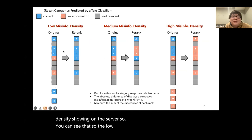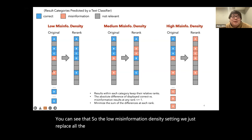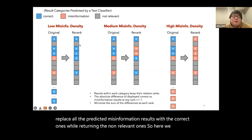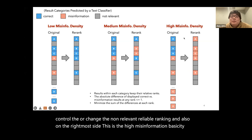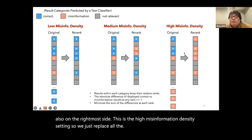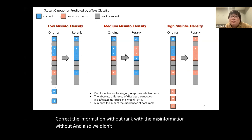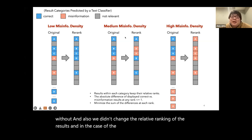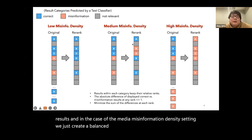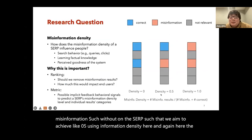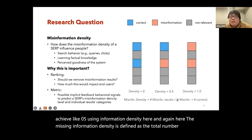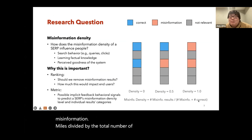The low misinformation density setting replaces all predicted misinformation results with correct ones while retaining the non-relevant ones — we didn't control or change the non-relevant results ranking. The high misinformation density setting replaces all correct information results with misinformation results, also without changing relative ranking. For the medium misinformation density setting, we created a balanced number of correct information and misinformation results on the SERP, aiming to achieve a misinformation density of 0.5. Misinformation density is defined as the total number of misinformation results divided by the total of misinformation plus correct information results.